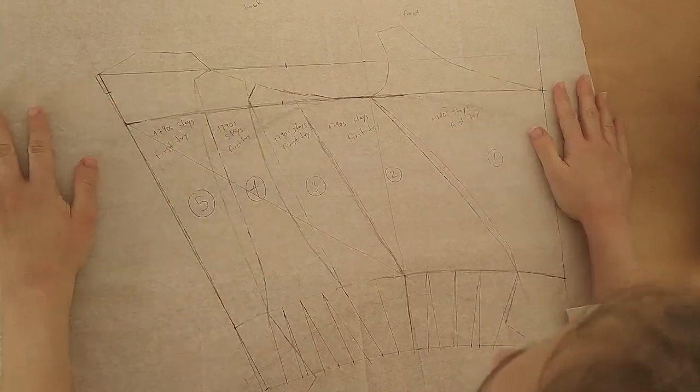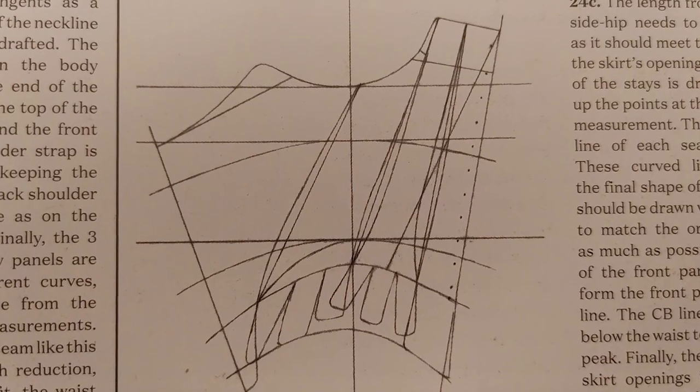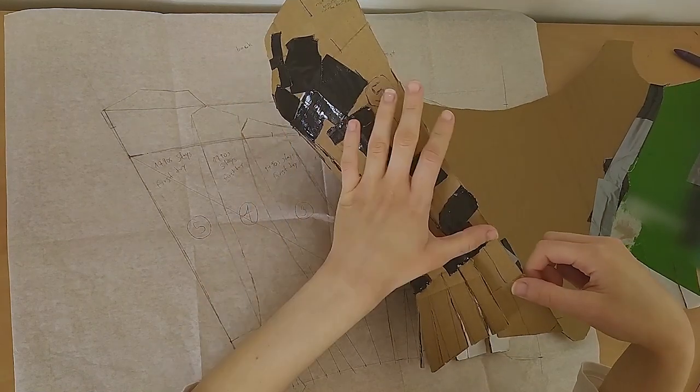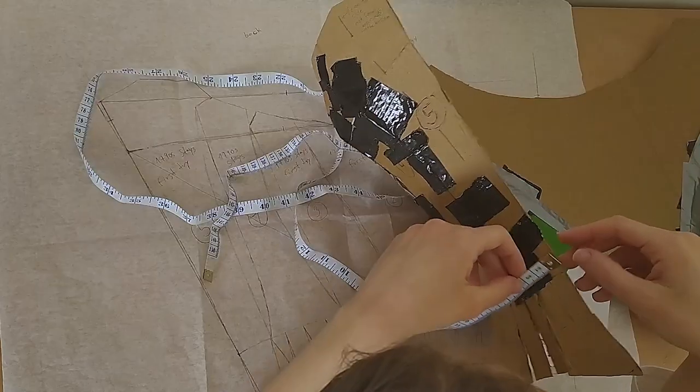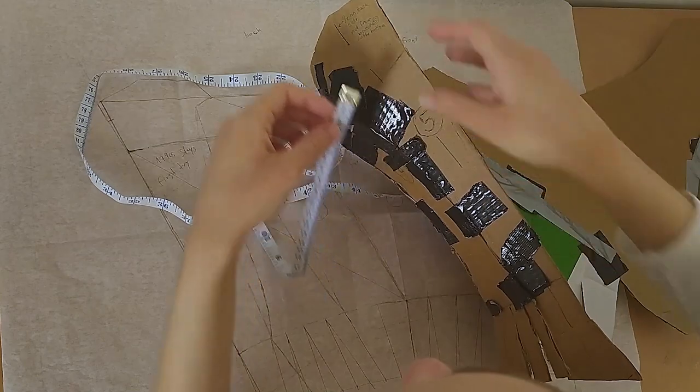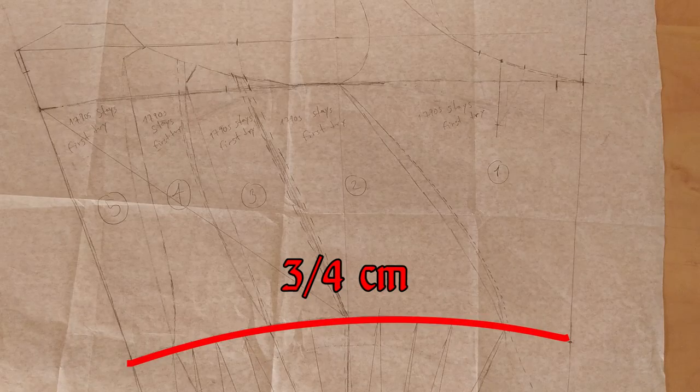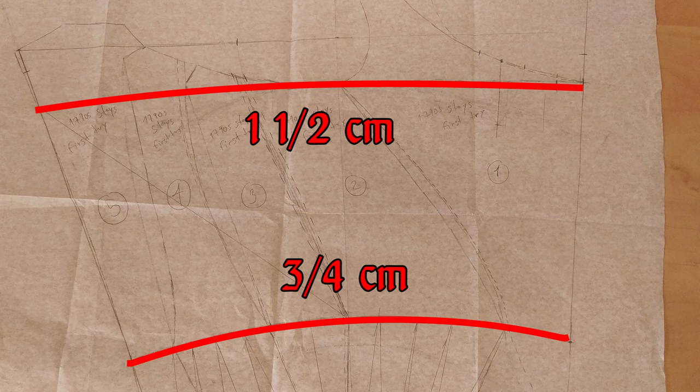So here's my original pattern, drafted in the arc method talked about in Patterns of Fashion 5. And this strip on the cardboard mockup is the amount I need to subtract from the pattern. One and a half centimeters at the waistline, and three centimeters at the bustline. So that's three quarters of a centimeter at the waist on each side, and one and a half at the bust on each side. This shouldn't be too hard, right?